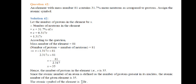Question 42: An element with mass number 81 contains 31.7 percent more neutrons as compared to protons. Assign the atomic symbol. Let the number of protons be x. Then neutrons = x + 31.7% of x = 1.317x. Since mass number = 81, we have x + 1.317x = 81, so x = 81 / 2.317.